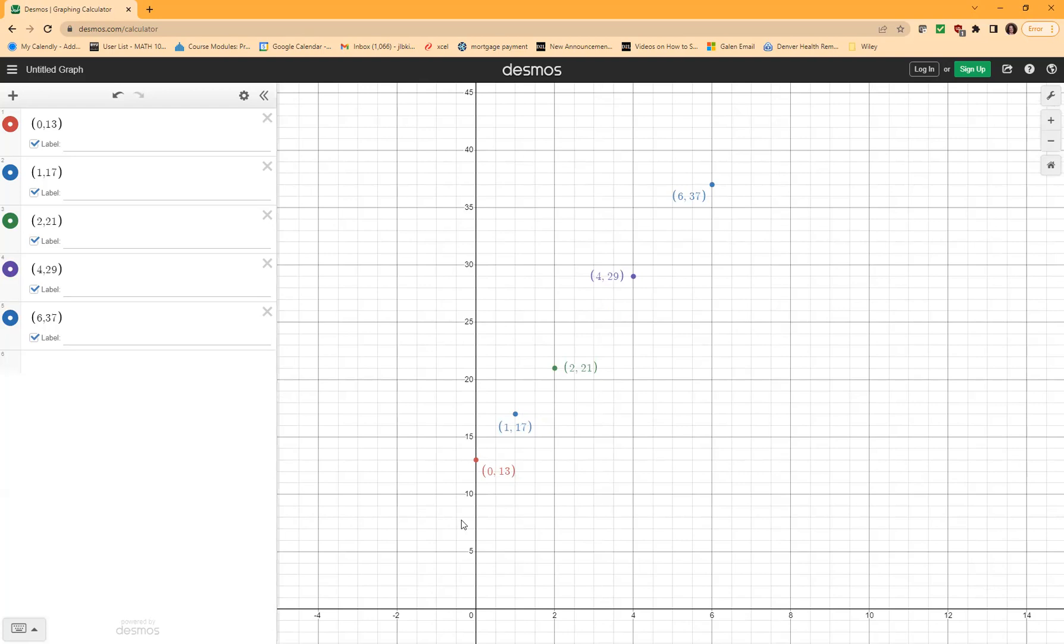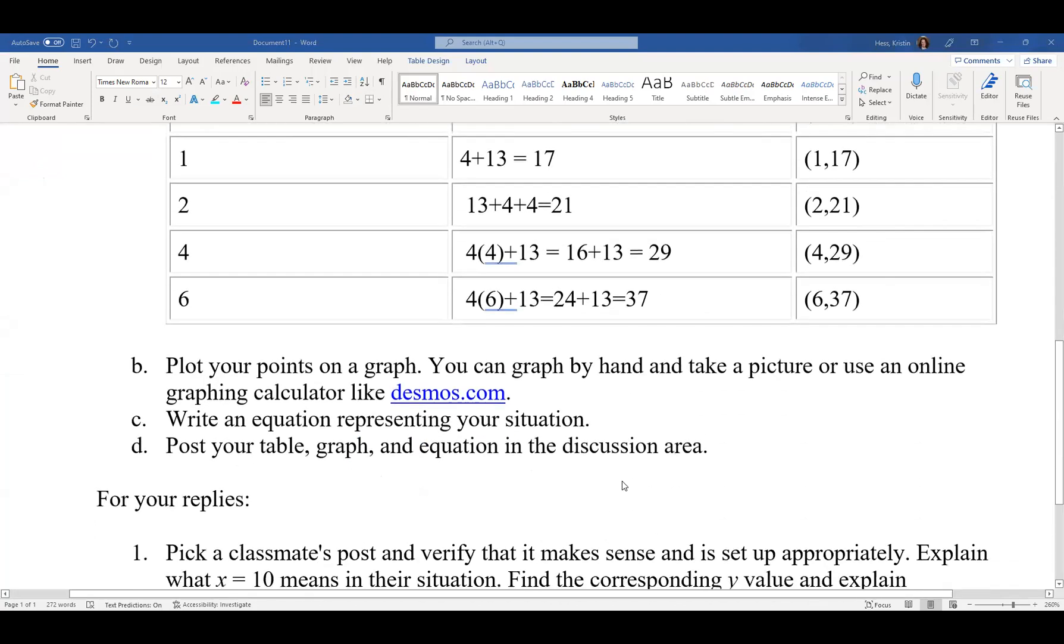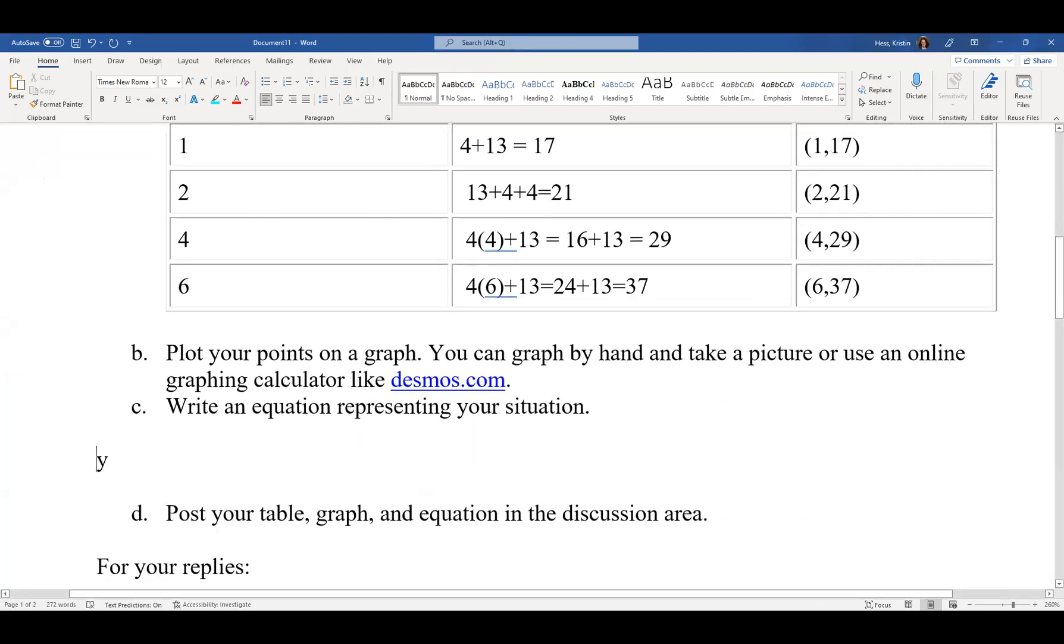So now I have all the points graphed. And I'm going to go back to my document. So now that we're here, we're going to look at the next part of the problem. The next part says write an equation. So we're going to write y equals mx plus b. That's the form our equation is going to be. That means we need to figure out what m and b are.